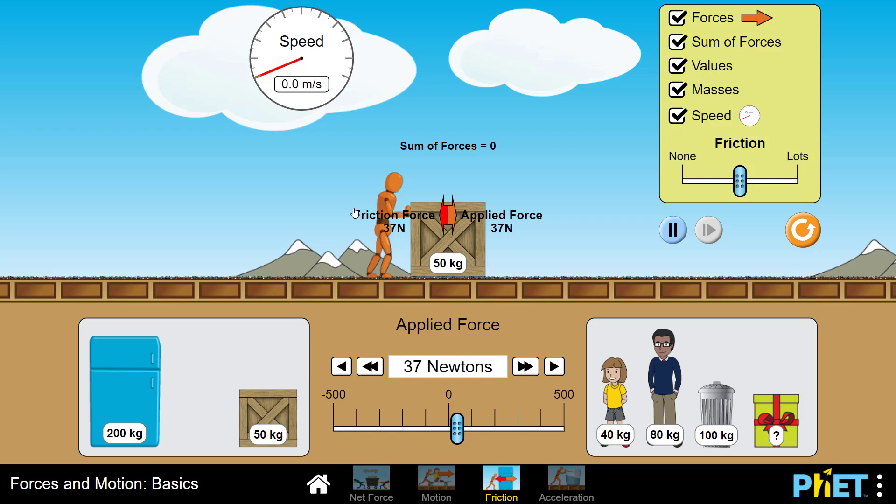37 Newtons isn't doing it, increase. 58 Newtons still no motion, increase some more. 80 Newtons, the box is remaining motionless and notice that my 80 newton force is counteracted by an 80 newton friction force. The sum of the forces as indicated is zero.